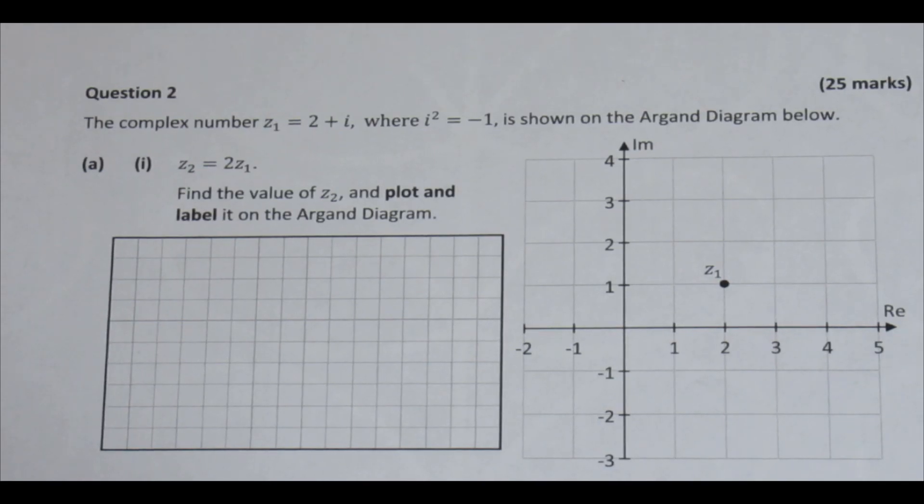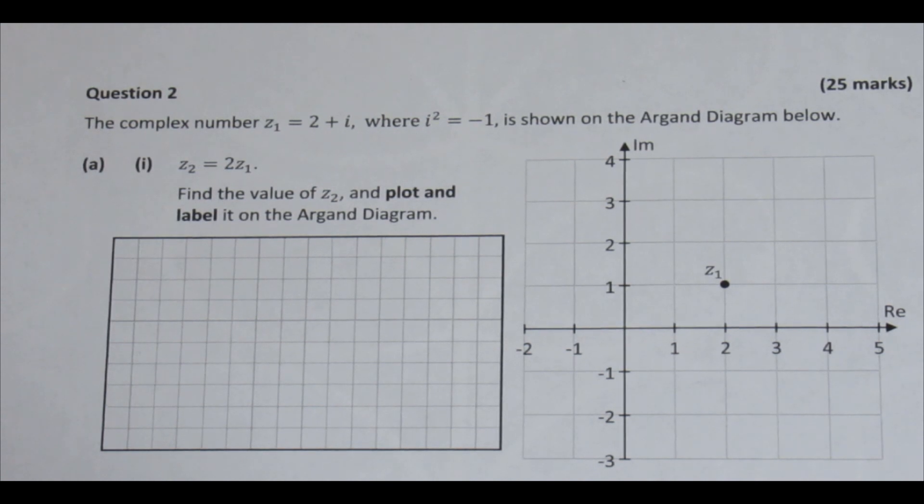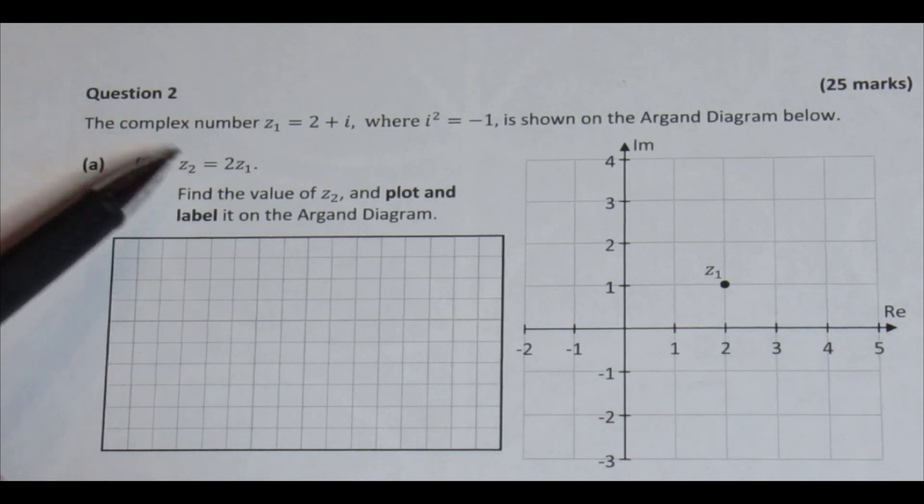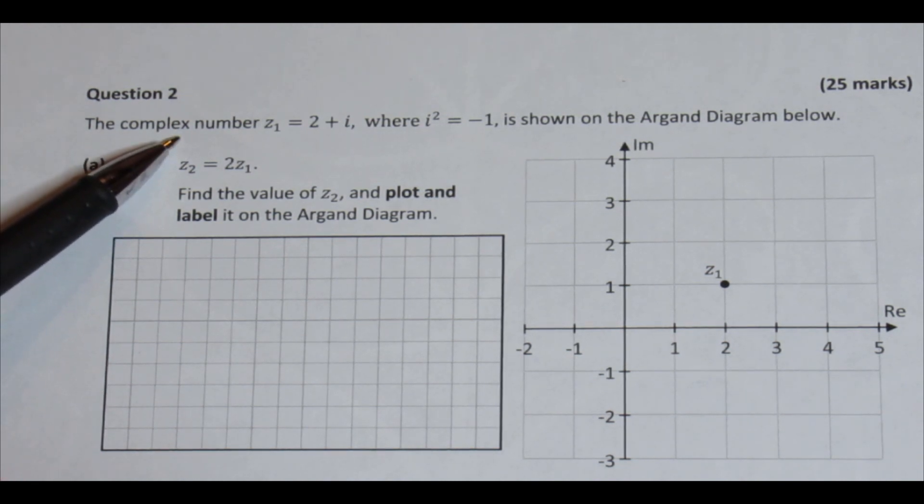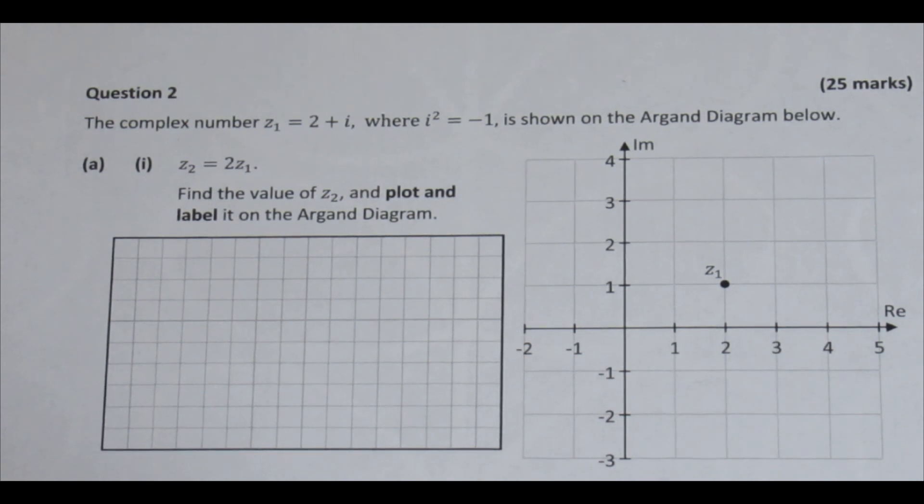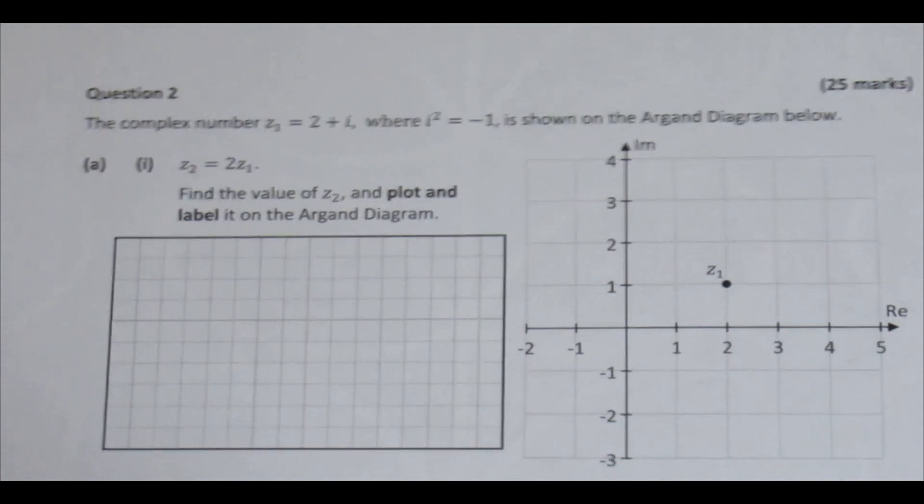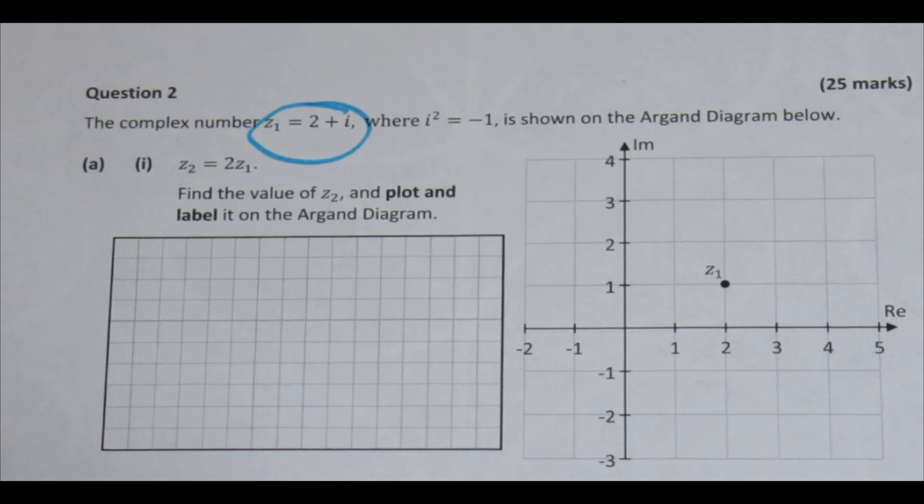So this is question two, part A, part I. And if you have a look here already, very quickly, we can see that there actually is a hint already to tell us that we are looking at a complex number question. Like always, get out your highlighter, your red pen, or whatever you need, and underline or circle the relevant information. The complex number Z1 is equal to 2 plus i. So I'm going to circle that and make it obvious.